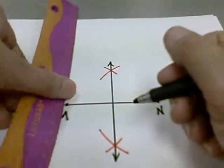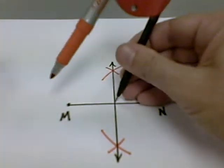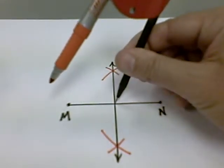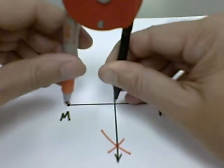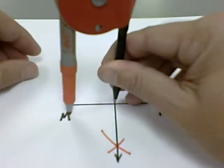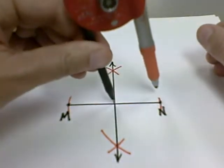It bisects our line segment. If I place my compass on the intersection of the two lines and open it up so that it intersects point M, then mark the opposite end, I can see that it does go through N.